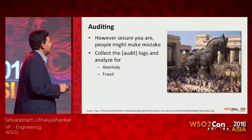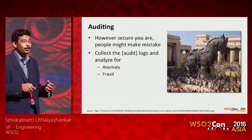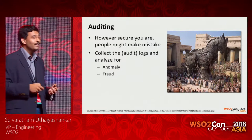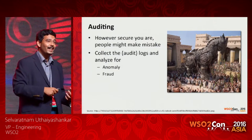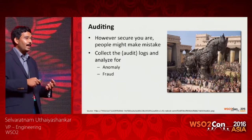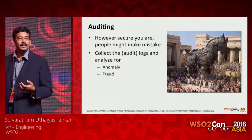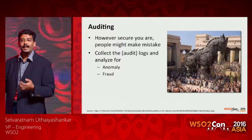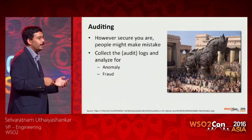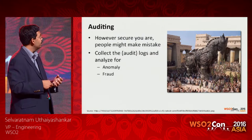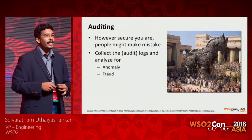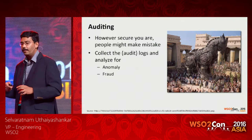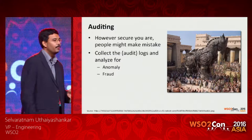Auditing is the next part. Like the story of the Trojan horse — you might have a well-guarded fort, but some human decides to let a nice-looking wooden horse inside. People make mistakes, intentionally or unintentionally, and you have to find such cases. Auditing is done by collecting all audit logs and analyzing them for anomalies or fraud. The identity server supports audit logs, and analytics frameworks support anomaly detection and fraud detection. There is a fraud detection toolkit where you can run and find any anomaly or fraud within the system.